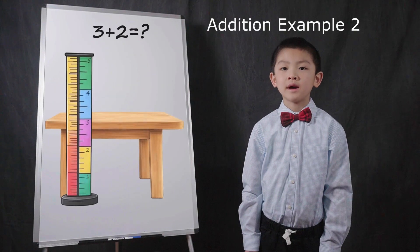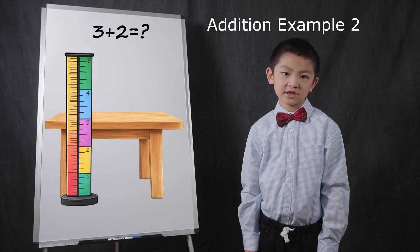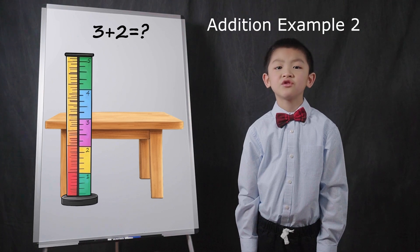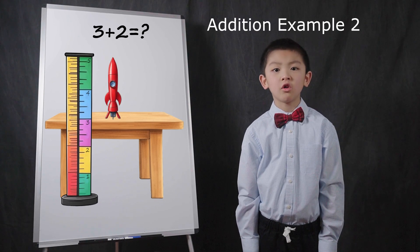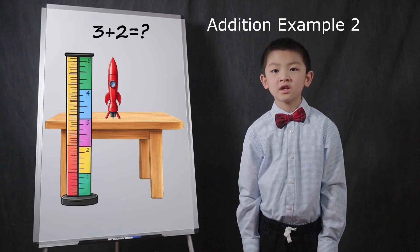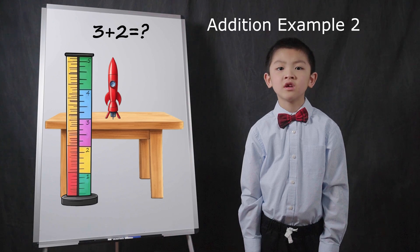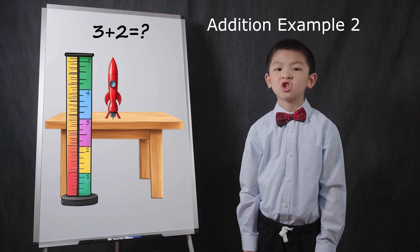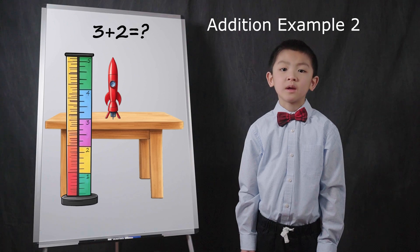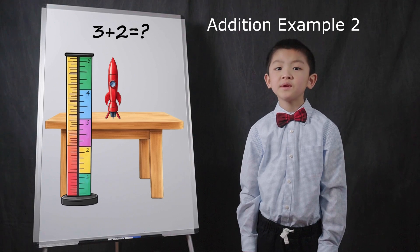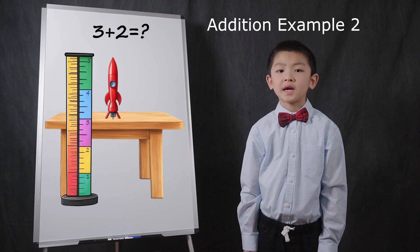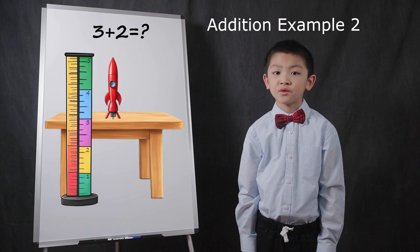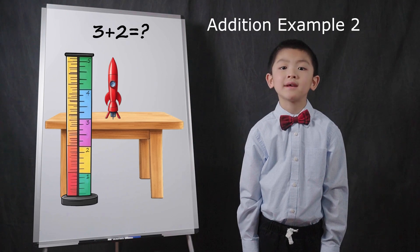Let's say you have a table that is 3 feet tall. On the table is a toy that is 2 feet tall. What is the combined height of the table plus the toy? As shown with this measuring stick, you start at 3 feet, then count up 2 feet to get to 5 feet. 3 plus 2 equals 5.